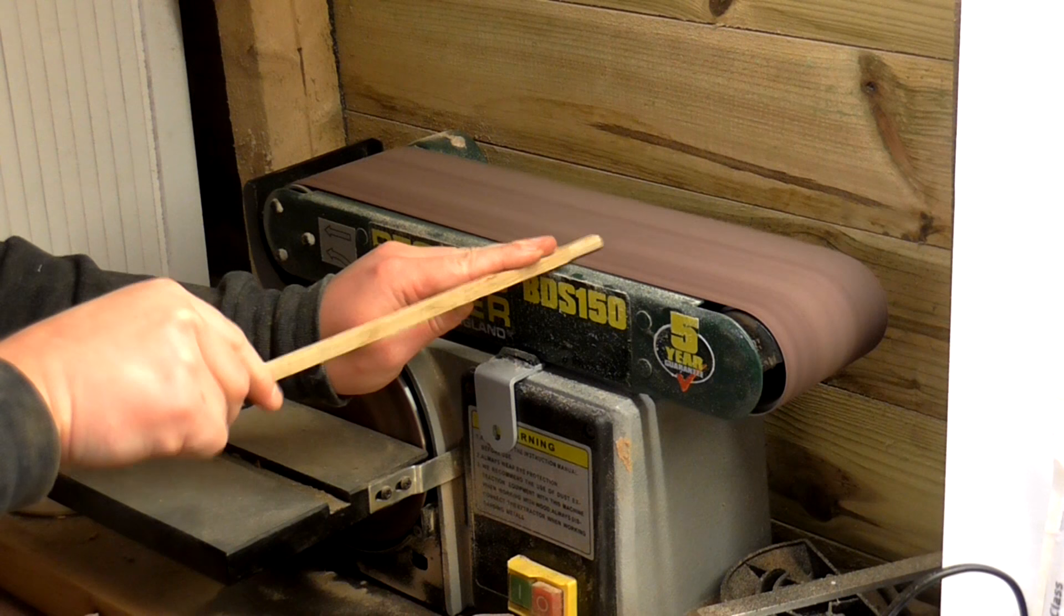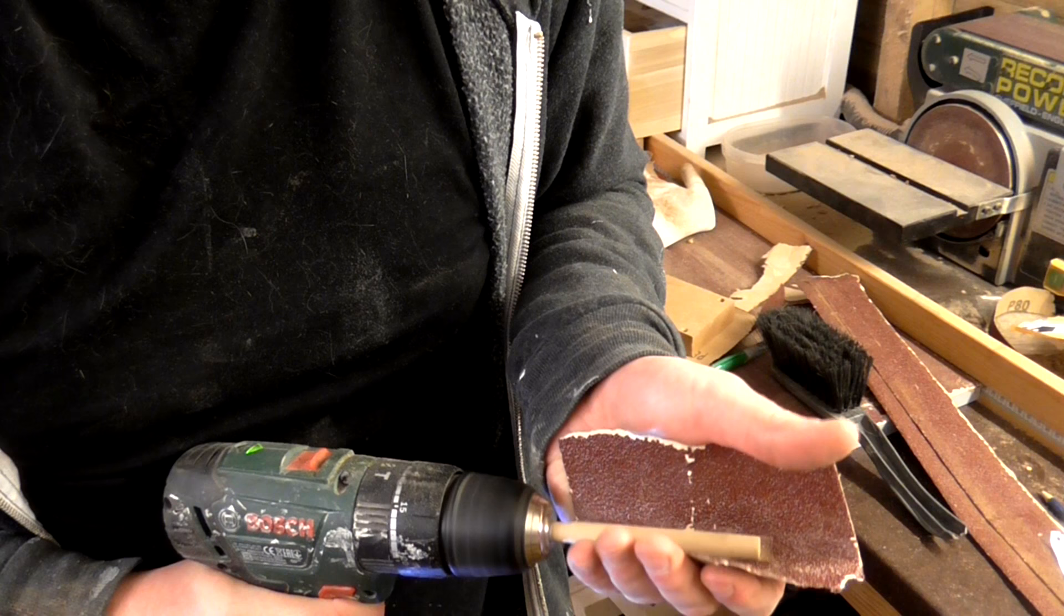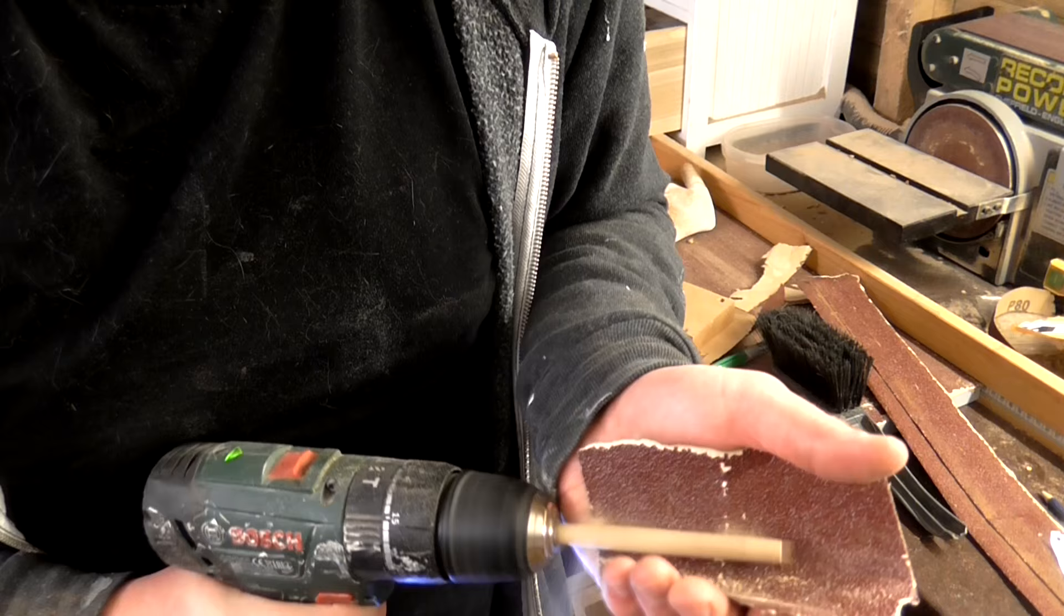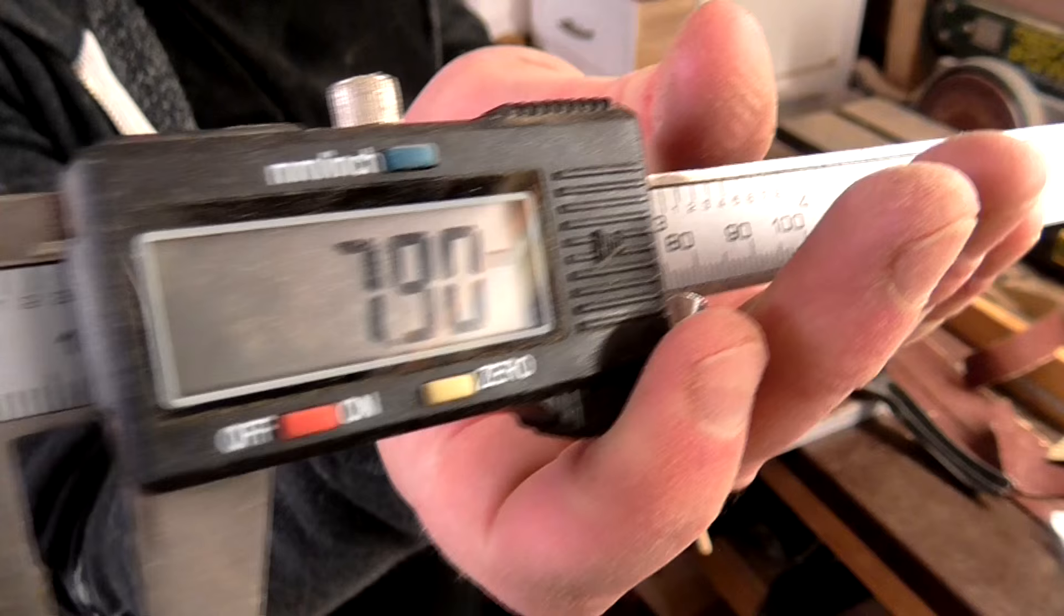Then I rounded over the end on the belt sander so that it would fit inside my drill chuck. I used some 40 grit sandpaper to round it over and then switched to 120 grit to make it smooth. It took a while to get the whole piece sanded to a consistent width, but eventually I managed to get it close to 8mm thick along the entire length.